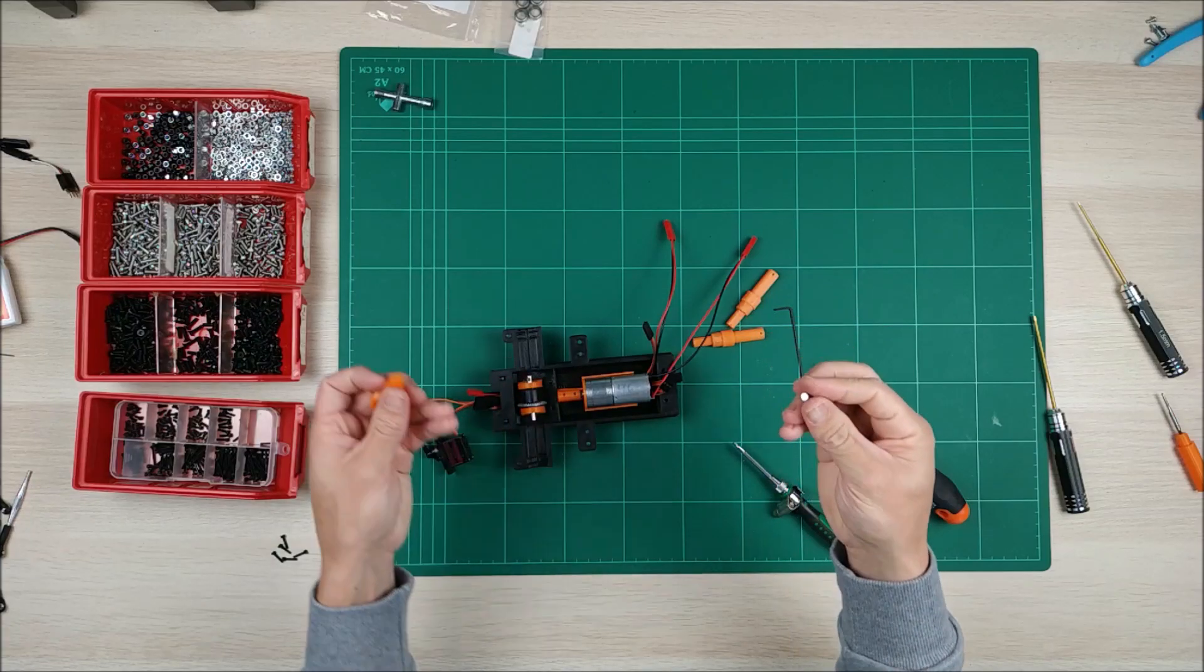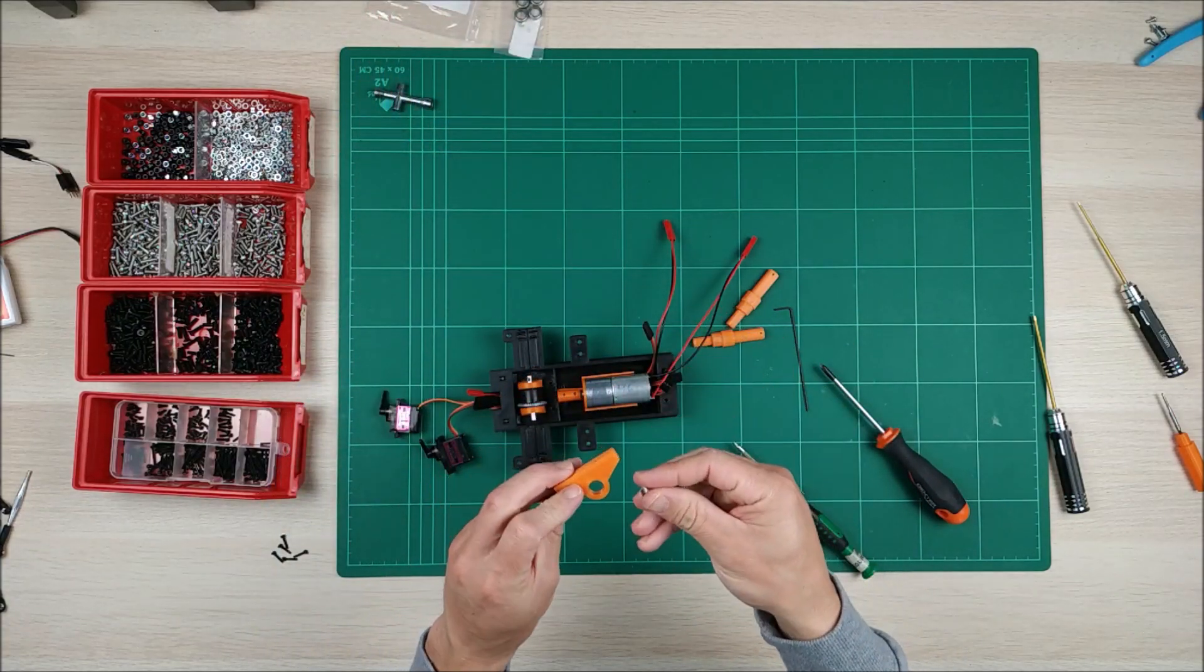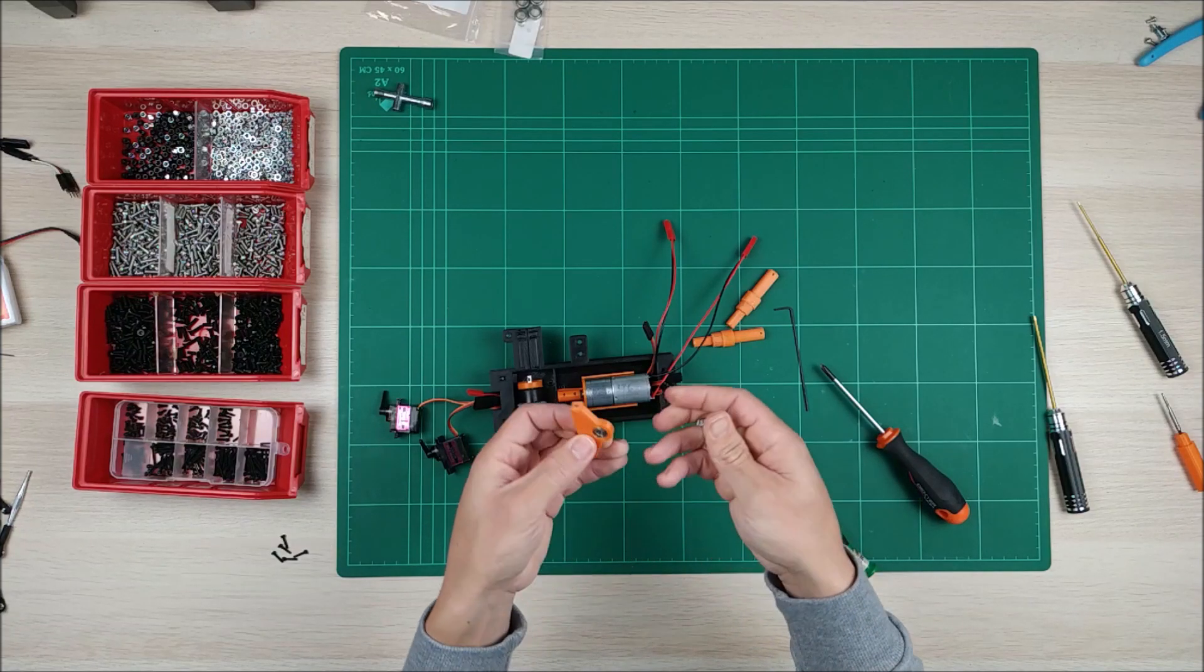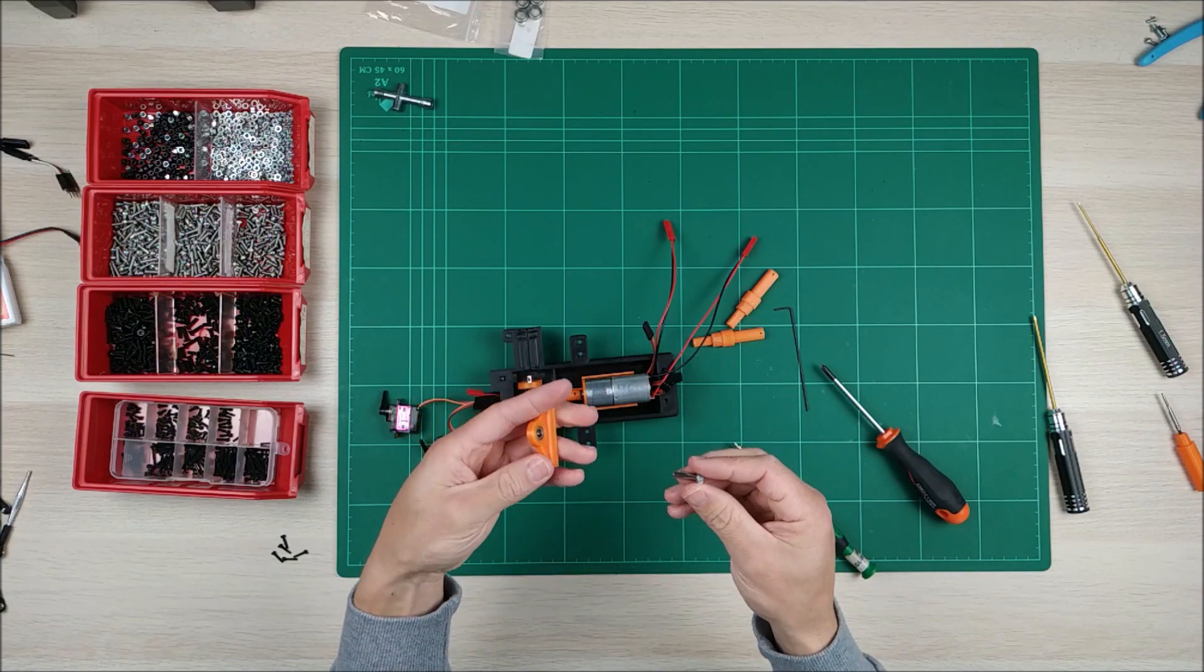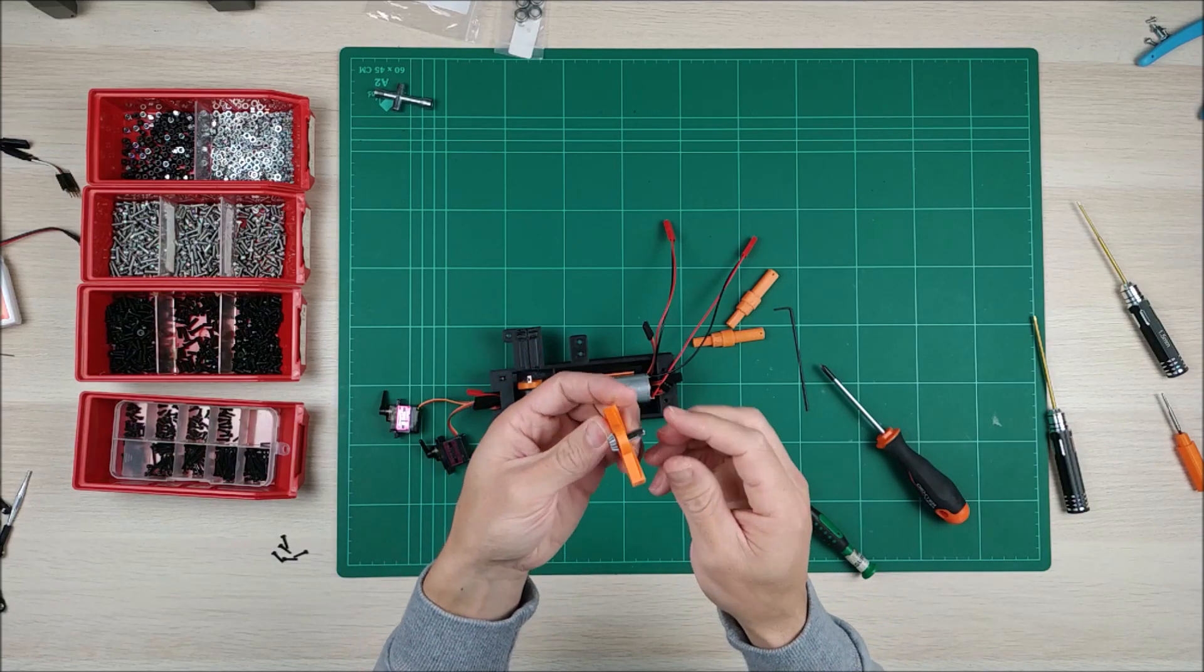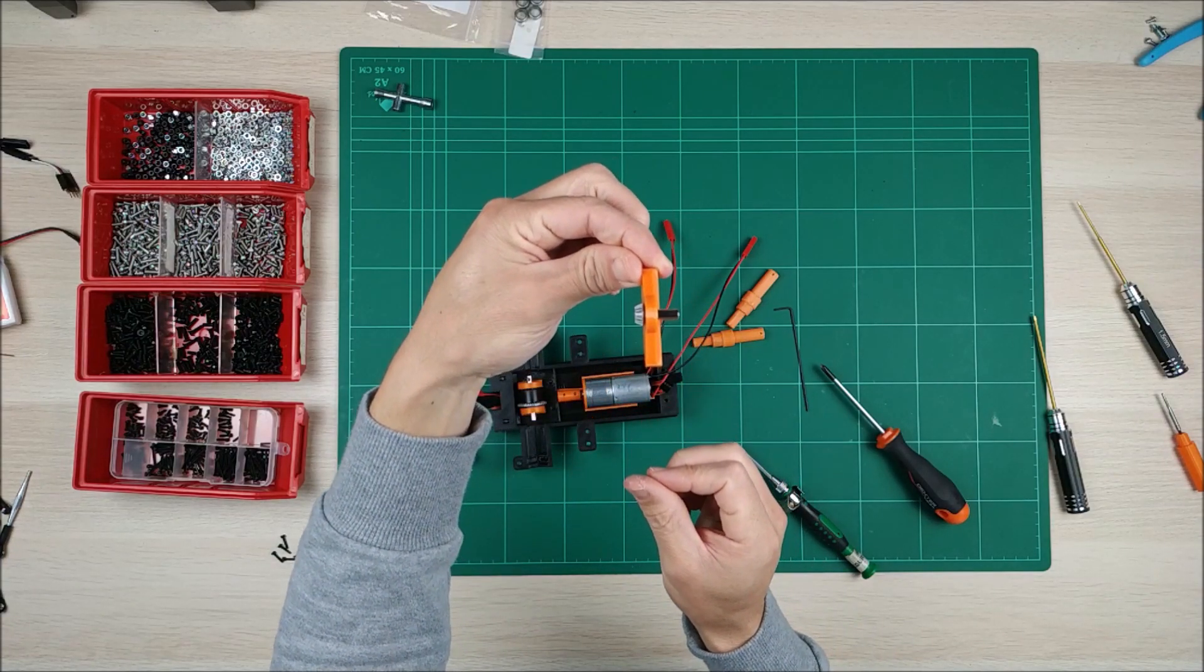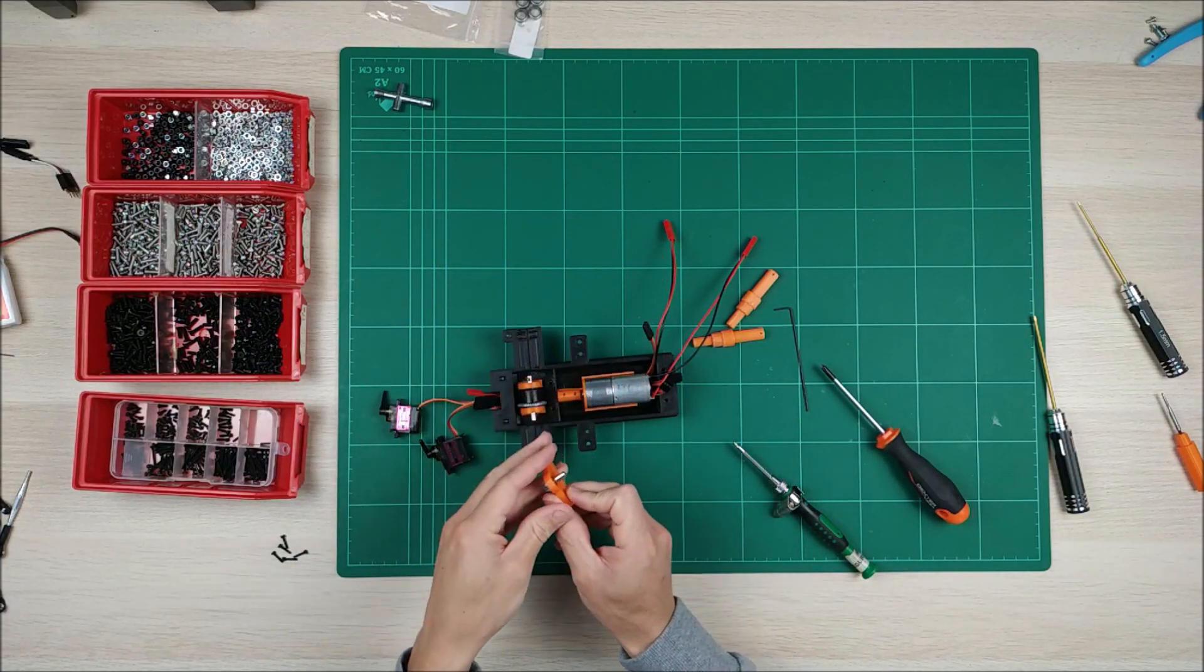And this is the gear for the differential. We're going to need this other bearing, the small one. We're going to insert it here. And this is going to go like this. This part here, I think you can see it.